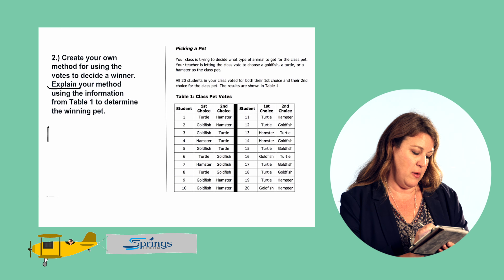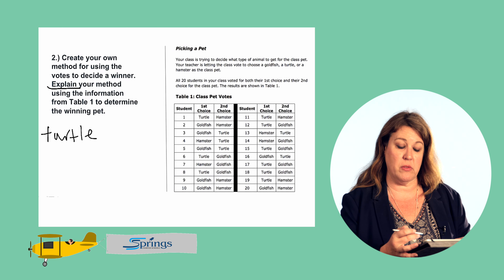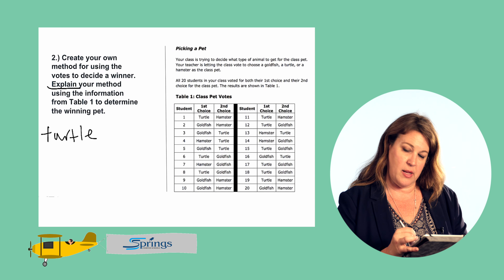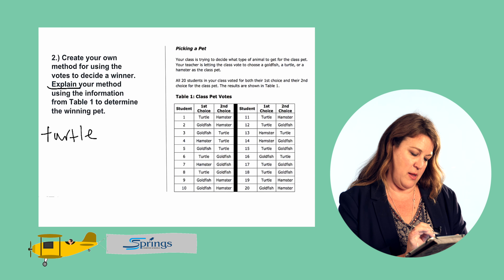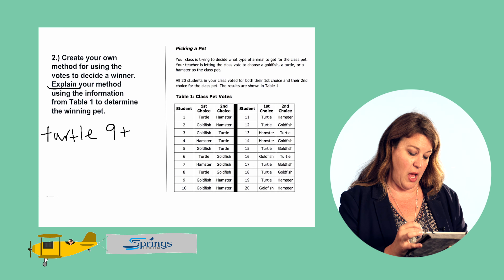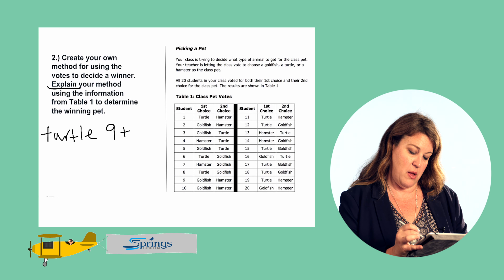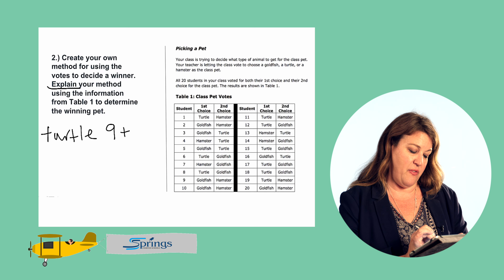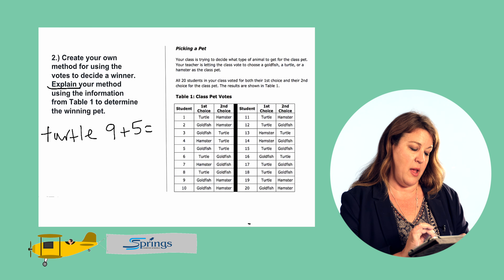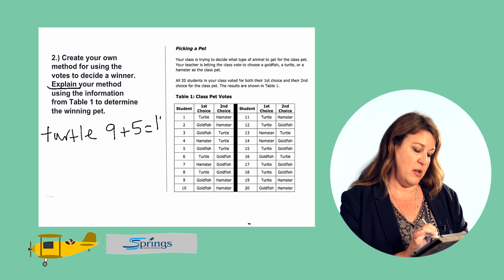So we have the turtle. We'll count up how many first choice votes the turtle got — that's nine first choice votes. Now let's add up how many second choice votes the turtle got in the second choice column — that's five second choice votes. So the turtle got nine plus five: 14 total votes.